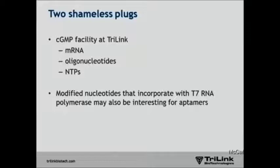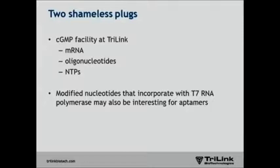Two shameless plugs: we recently opened a GMP facility at TriLink for making messenger RNAs, oligonucleotides, and NTPs, targeted at early stage clinical trials — we're making an effort to make this as affordable as possible for small studies. Also, these modified RNAs incorporate with T7 RNA polymerase and it may be interesting to look in the context of aptamers. We have data on which modifications are amenable to RT-PCR and are happy to share lists of NTPs incorporatable by T7 polymerase. There was a nice earlier talk about chemical modifications improving aptamers, and we've only begun to explore that space.